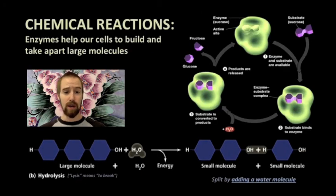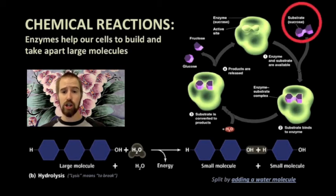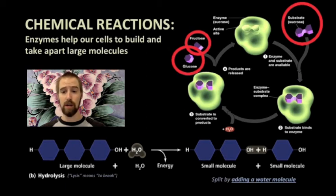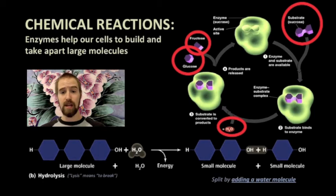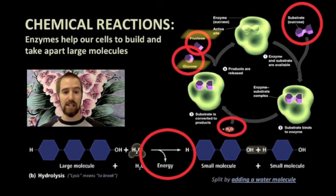This is an example of a hydrolysis reaction in which a larger molecule — a polymer — is broken down into smaller molecules, or monomers. Sucrose is our substrate, and when water is added — that's the hydro part — sucrose is split apart — that's the lysis part — into a molecule of glucose and a molecule of fructose. This kind of reaction would release energy into our cells, the same energy that originally went into assembling that polymer in the first place.